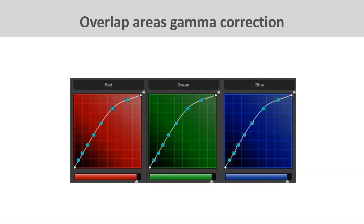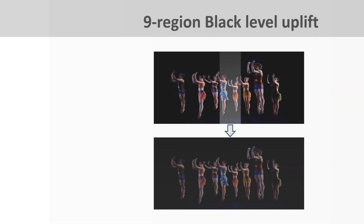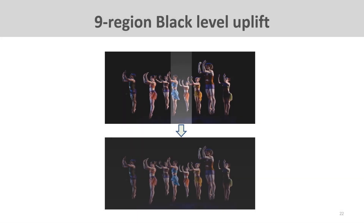To achieve a truly smooth blended image, Edge Blender provides advanced features to align the color and black level of overlap areas. Color alignment can be done by RGB at different brightness levels. Black level uplift compensates for different black levels in overlap areas caused by projector light leakage. A 9-region adjustment is necessary when projectors are blended both vertically and horizontally.